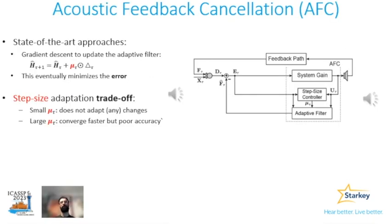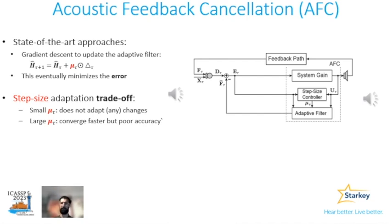The right-hand side diagram shows a schematic of the closed-loop system. The feedback component is generated by convolving the output or the receiver signal with the feedback path. At the same time, the adaptive filter is estimating the feedback path using a gradient descent update to minimize the error. The update looks like a step size mu times a constrained version of the gradient. There is this famous trade-off between the step size and convergence accuracy, which states that small step sizes may not adapt to changes, while large step sizes converge faster but with poor accuracy.